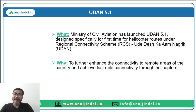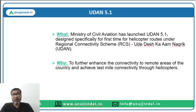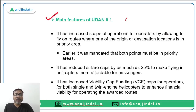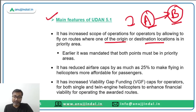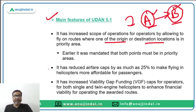The objective of UDAN 5.1 is to further enhance connectivity to remote areas where aircraft cannot travel, by using helicopters. Key features include: it has increased the scope of operations for operators by allowing flights on routes where either the origin or destination is in a priority area — previously both had to be in priority areas. It has also reduced airfare caps by as much as 25 percent to make helicopter travel affordable.